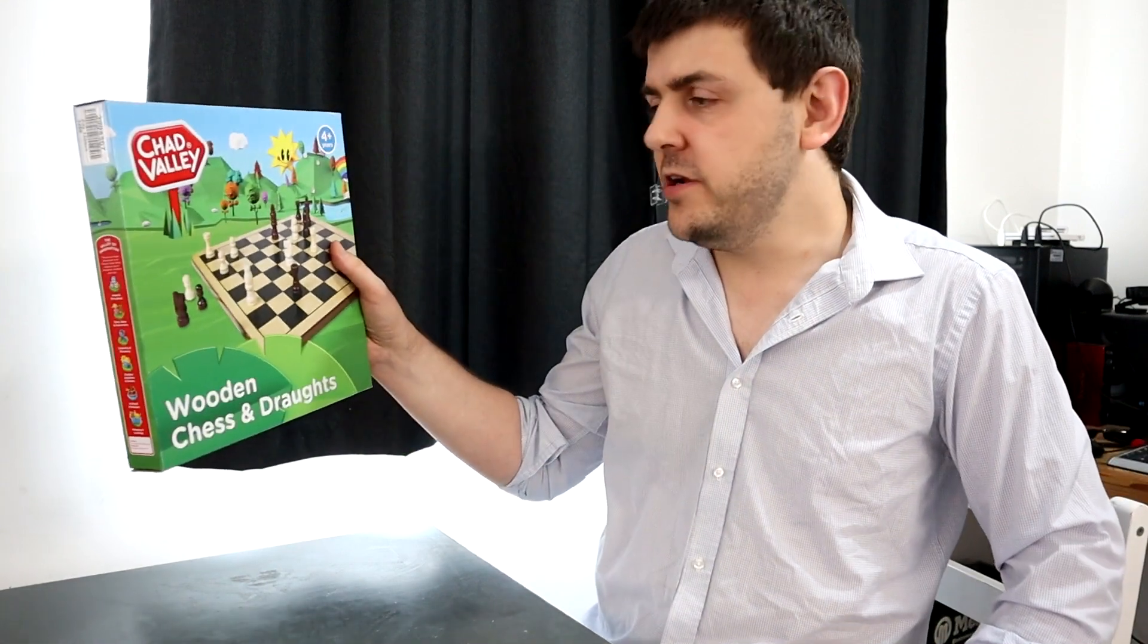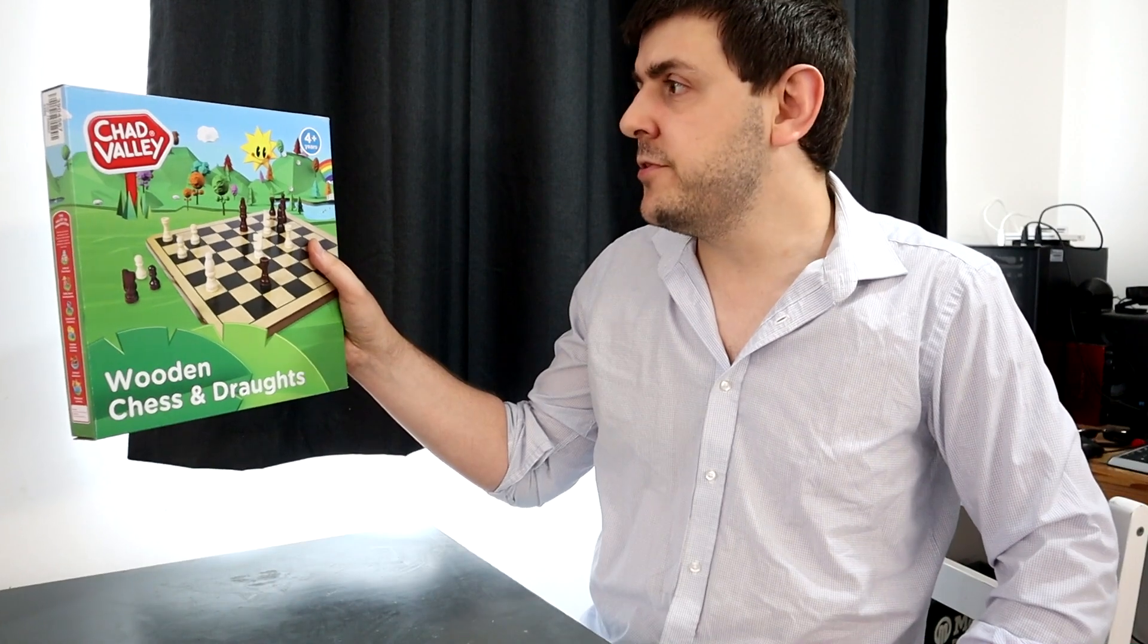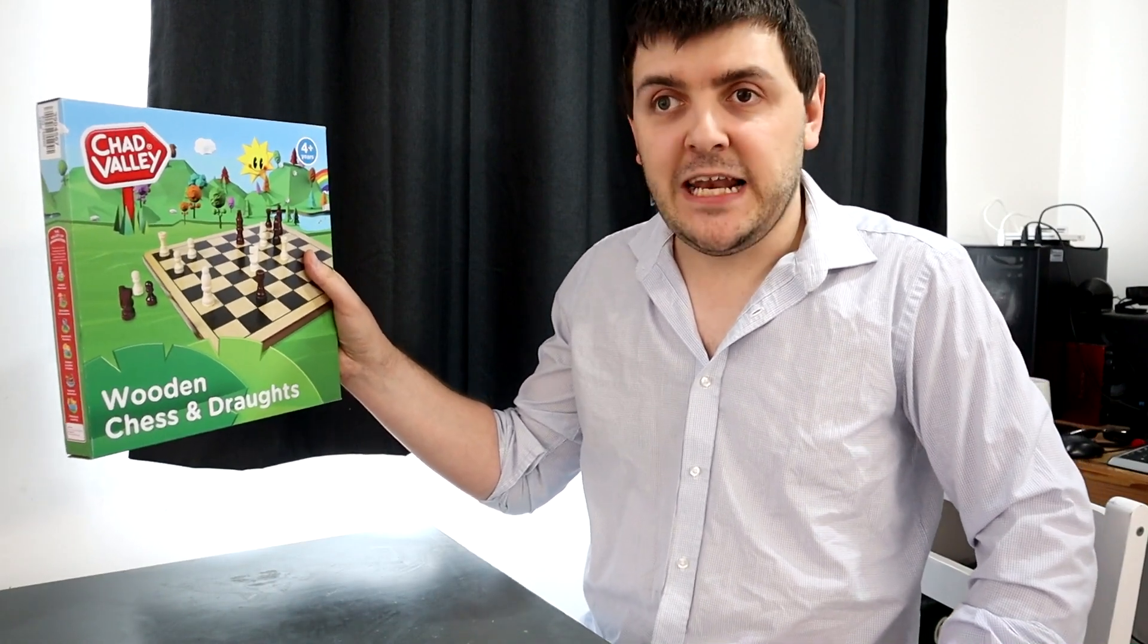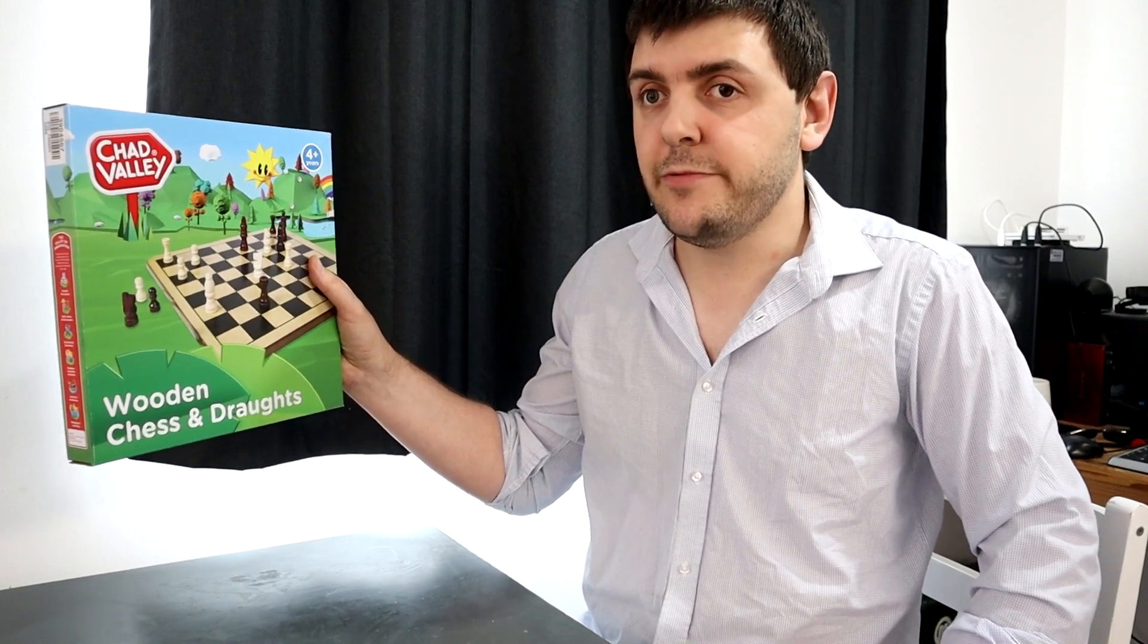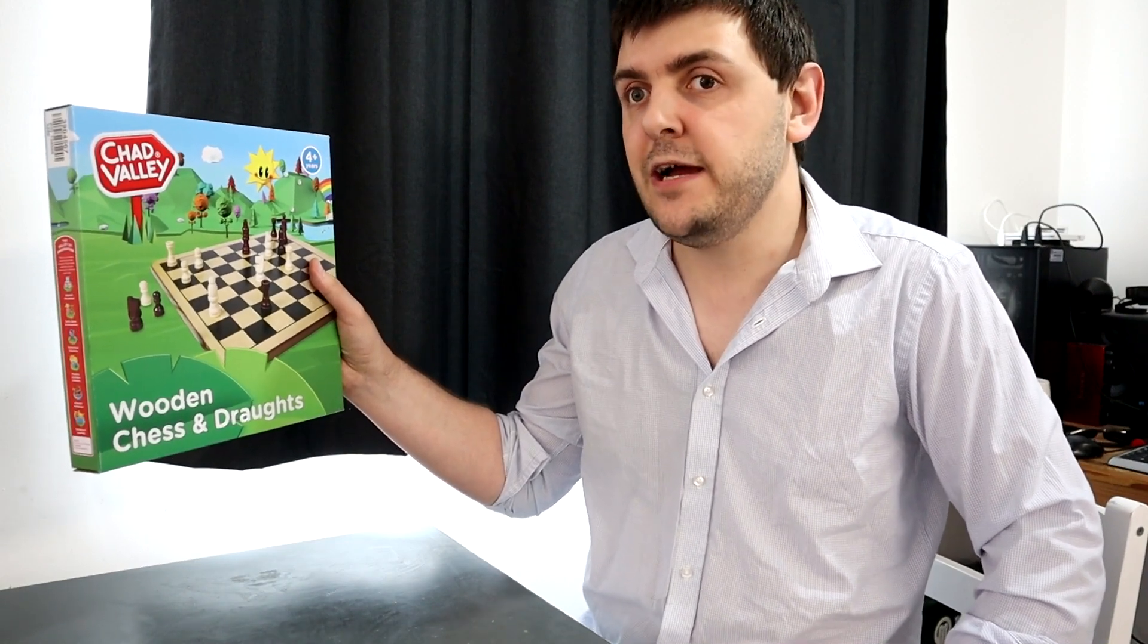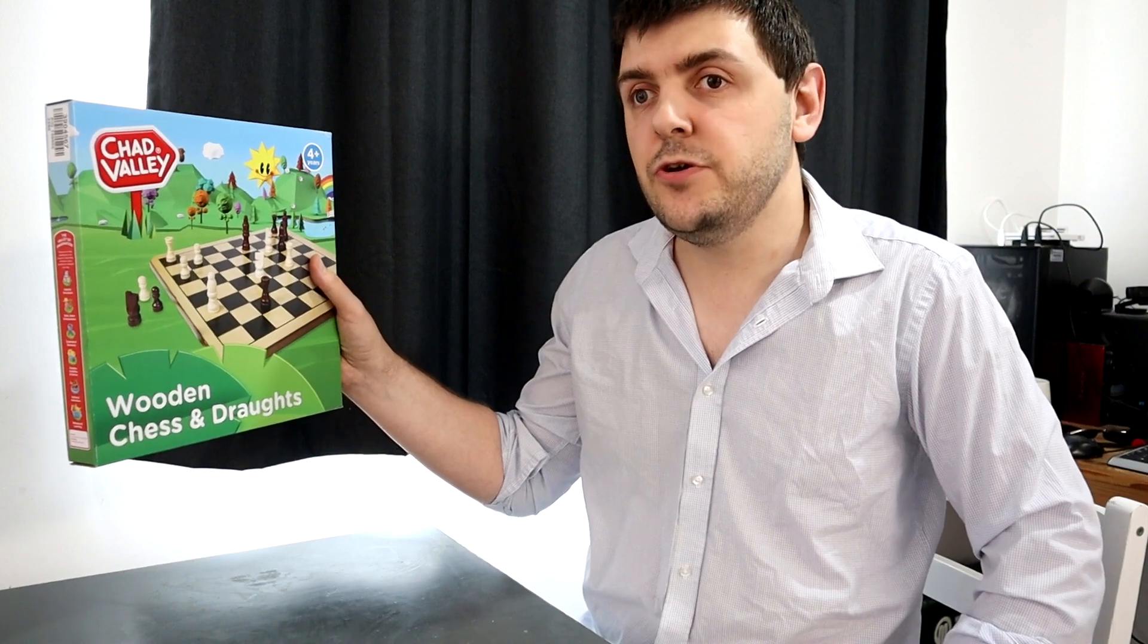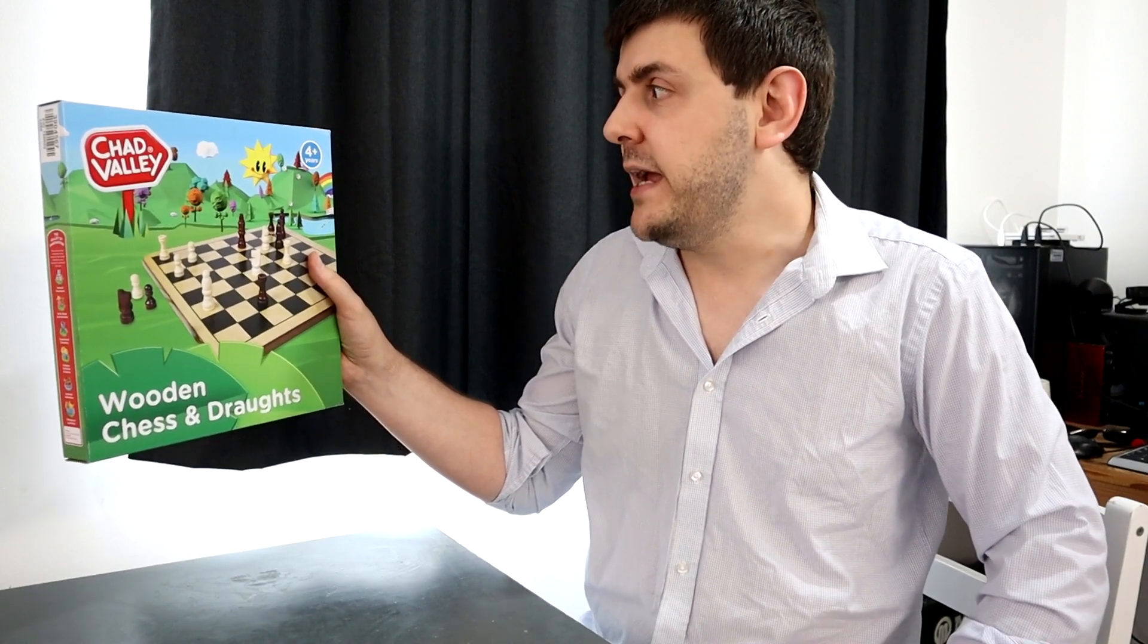Welcome to this unboxing video for this wooden chess and draughts board from Chad Valley. This is an Argos exclusive, available at the time of recording for around £10, or as part of their 2 for 20 range.